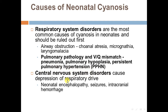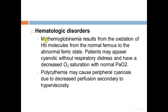CNS disorders cause depression of the respiratory drive, including neonatal encephalopathy, seizures, and intracranial hemorrhage. Hematological disorders include methemoglobinemia, which results from the oxidation of hemoglobin molecules from the normal ferrous to the abnormal ferric state. Patients may appear cyanotic without respiratory distress and have decreased O2 saturation with normal PaO2. Polycythemia may cause peripheral cyanosis due to decreased perfusion secondary to hyperviscosity.